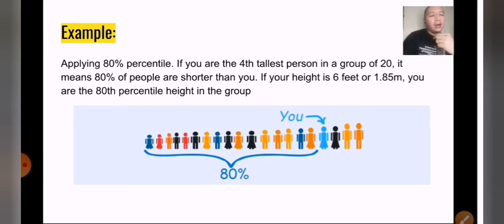If there are 20 people and you are the fourth tallest person, you were told that you are the fourth tallest in this group of 20. What that means is that 80 percent of the people are shorter than you if you belong in the 20th percentile. So if your height is six feet or 1.85 meters, you are at the 80th percentile in the group.